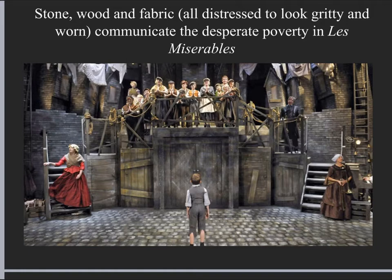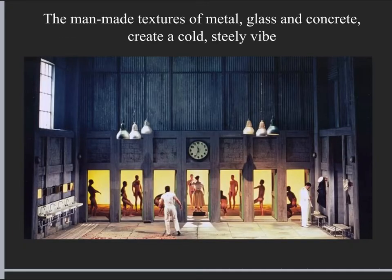Here's an example from Les Misérables: we've got wood, stone, and textiles from the laundry hanging up as part of the scenery. It's all quite distressed to look gritty, worn, and miserable — communicating desperate poverty through mostly natural materials worked into cobblestones, brick, and doors. Compare those textures with much more obviously manufactured textures of metal, glass, and concrete, which create a really cold and steely vibe.